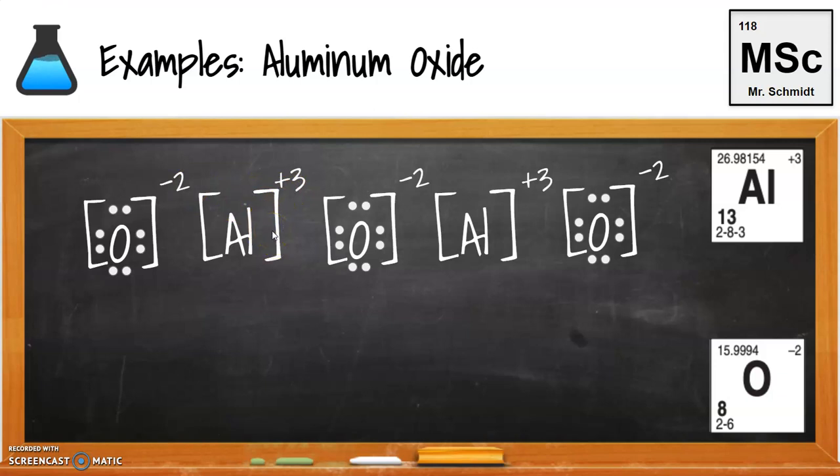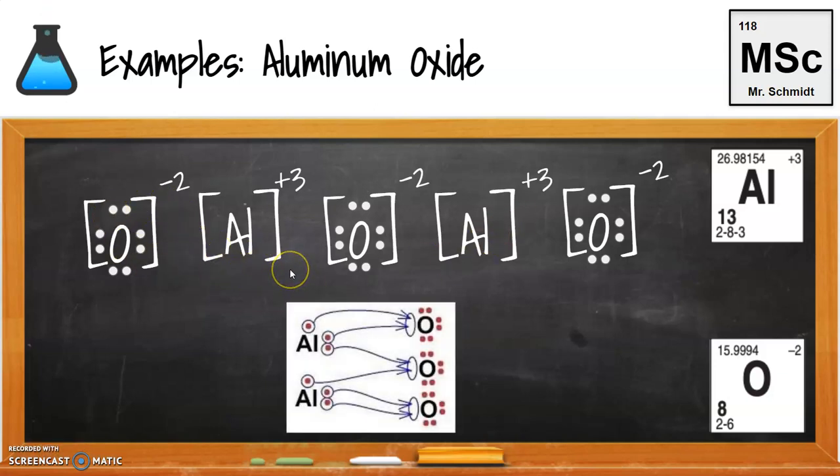We have to also remember the common factor between these with two and three is six. So we got to somehow get our charges to balance out to be six. So if we have a negative two, a negative two, and a negative two, that's all becomes negative six. Plus three and plus three, that becomes a positive six. Plus six, negative six cancels out.